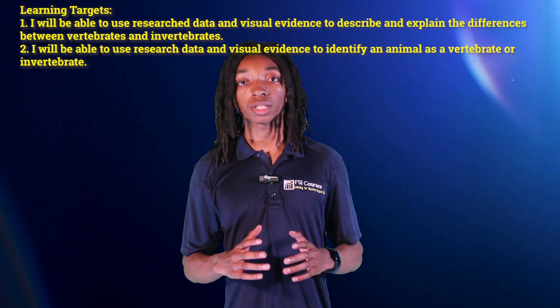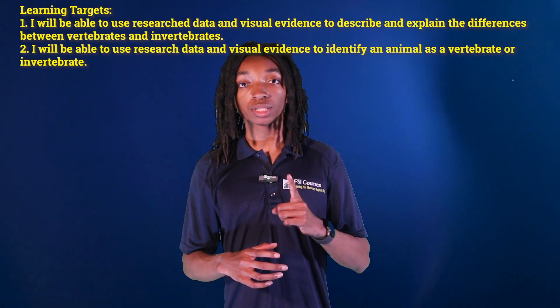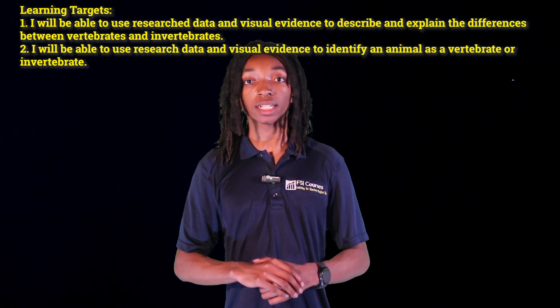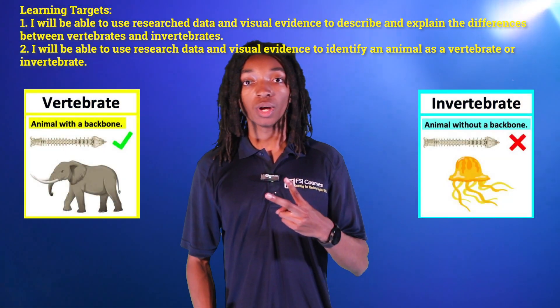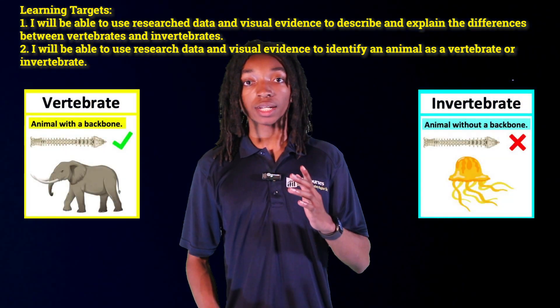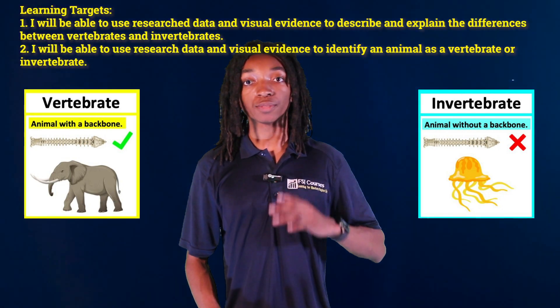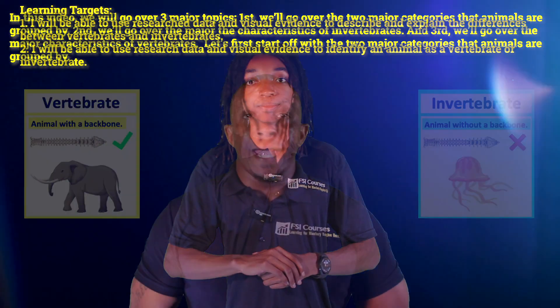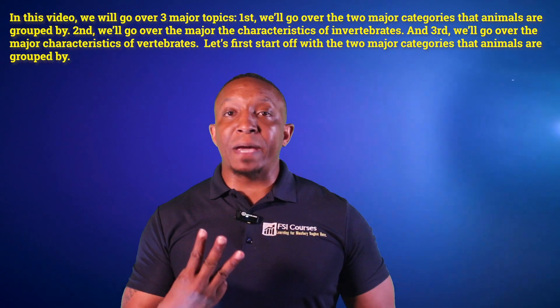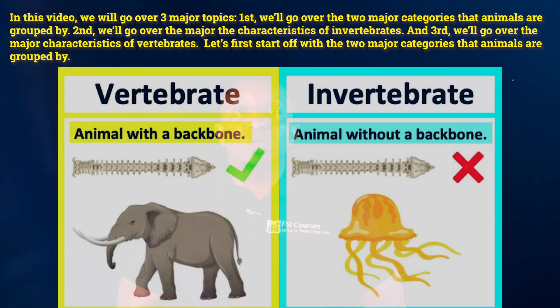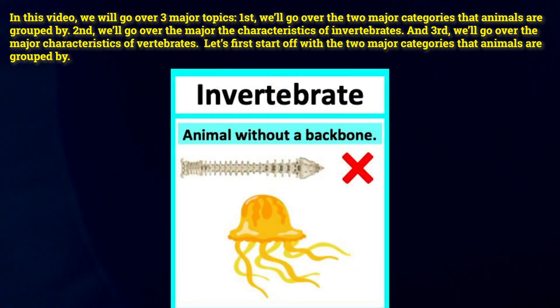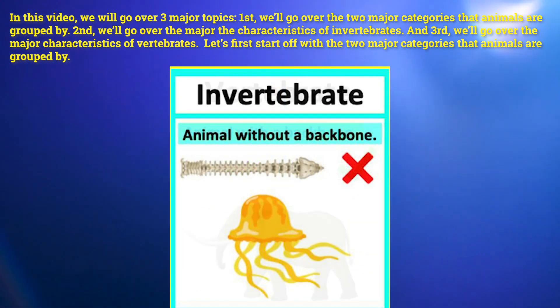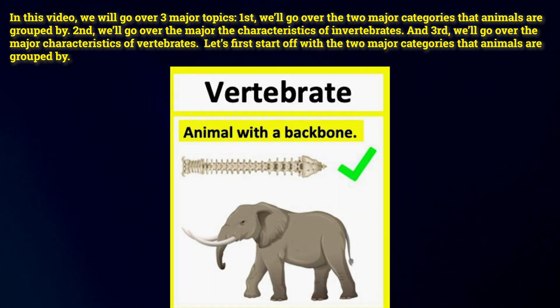Our learning targets for today are: number one, I will be able to use research data and visual evidence to describe and explain the differences between vertebrates and invertebrates. Number two, I'll be able to use research data and visual evidence to identify an animal as a vertebrate or invertebrate. In this video, we will go over three major topics: first, the two major categories that animals are grouped by; second, the major characteristics of invertebrates; and third, the major characteristics of vertebrates.